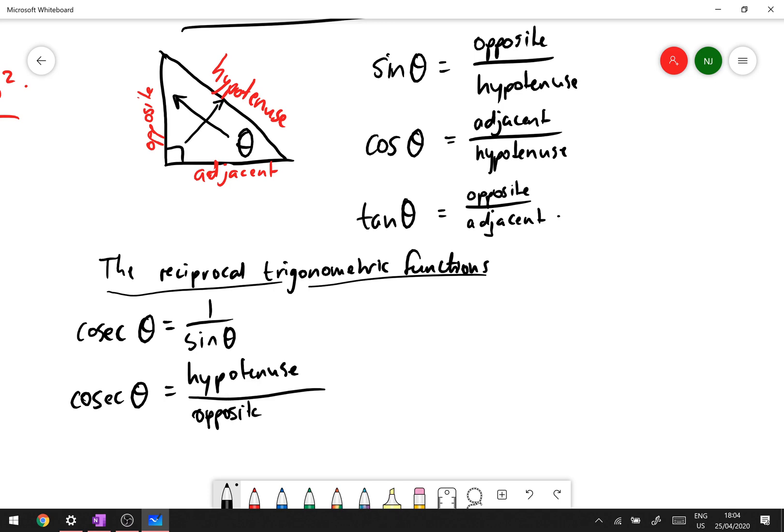So sine is equal to opposite over hypotenuse, so cosec is hypotenuse over the opposite. So it's just flipped. After cosec we have sec. So sec theta is equal to one over cos of theta, and if we are doing the same thing as before, well that's just the hypotenuse over the adjacent for that one.